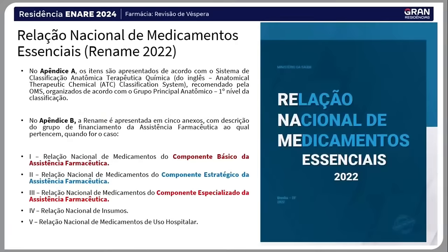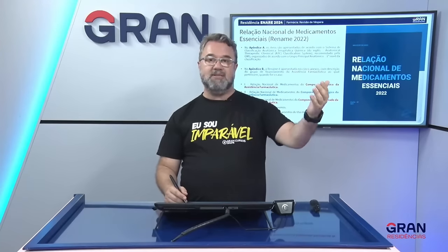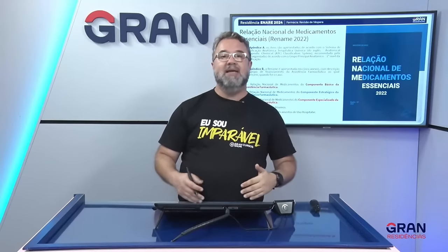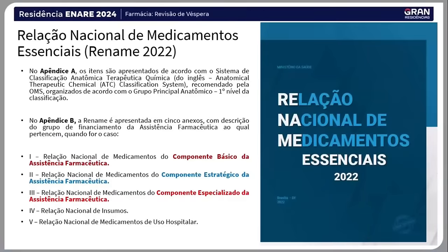Como falamos do ciclo da assistência farmacêutica no SUS: todos os medicamentos no ambiente hospitalar, a maioria que os pacientes usam, estão dentro de uma padronização nacional. O ciclo da assistência farmacêutica começa na seleção. Essa padronização para o SUS se chama Relação Nacional dos Medicamentos Essenciais — a RENAME. A RENAME 2022 tem duas classificações: o Apêndice A e o Apêndice B.